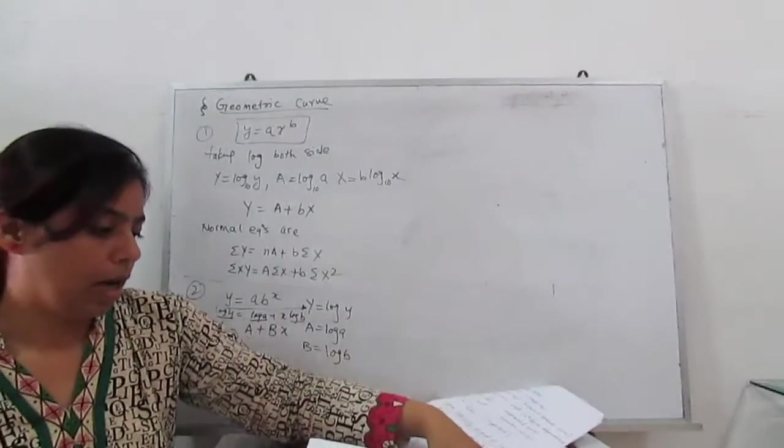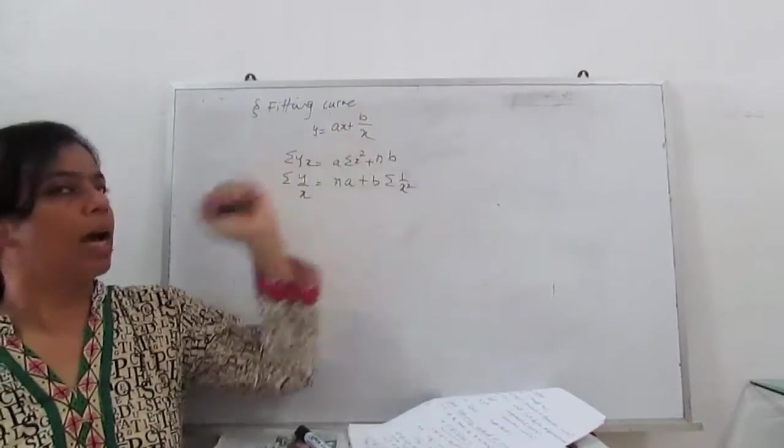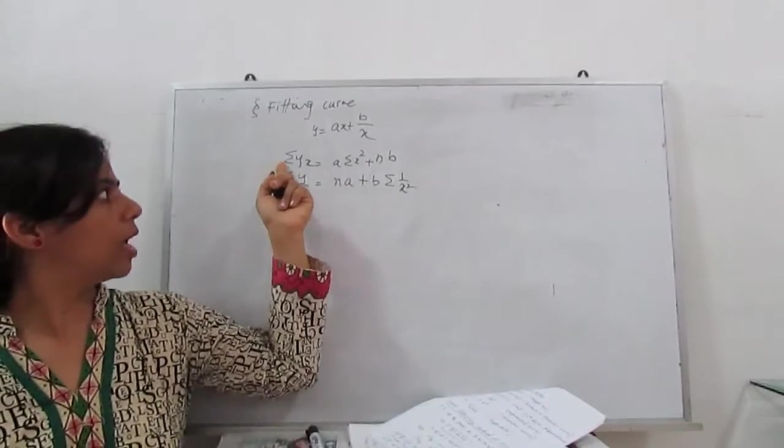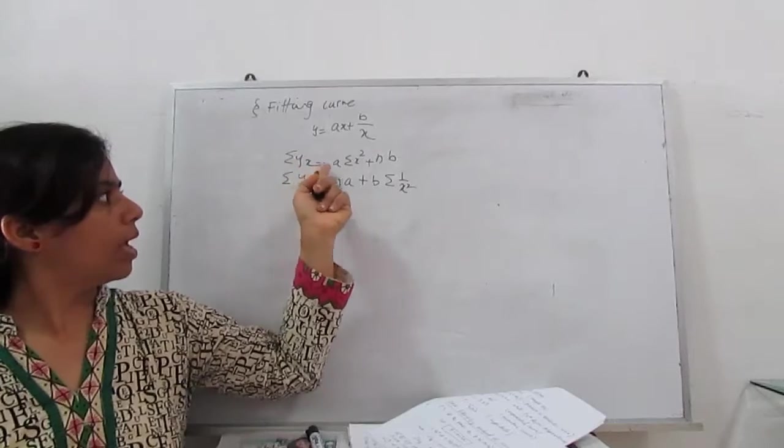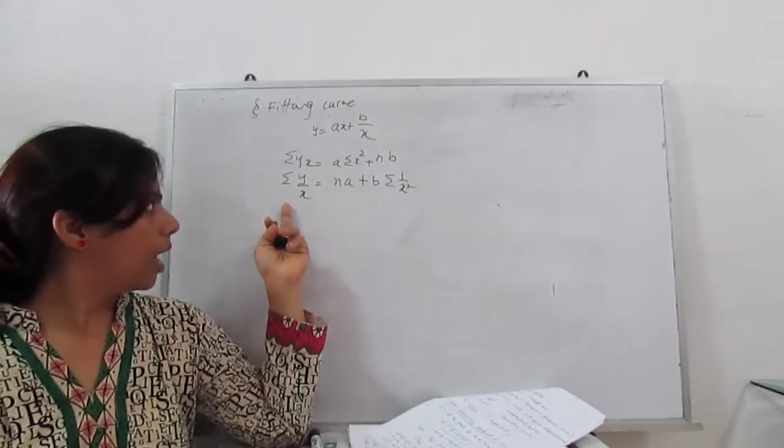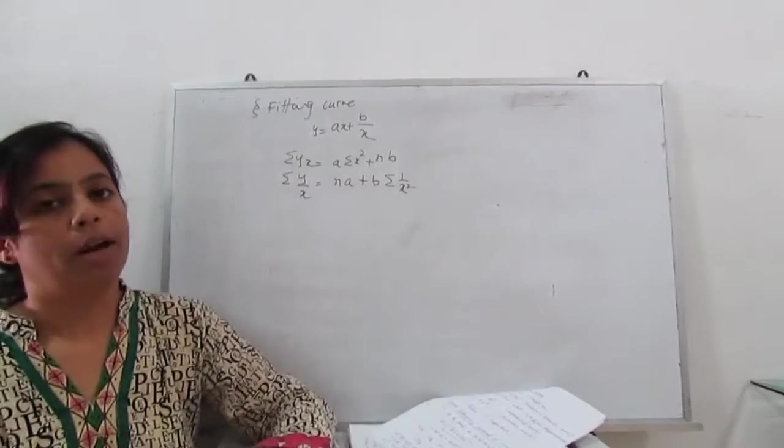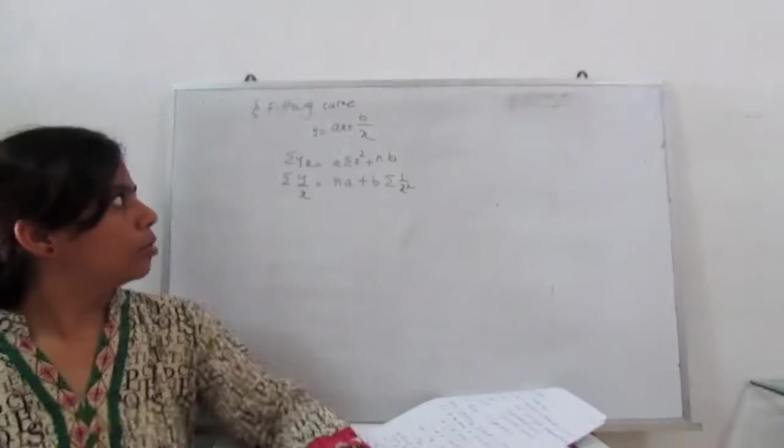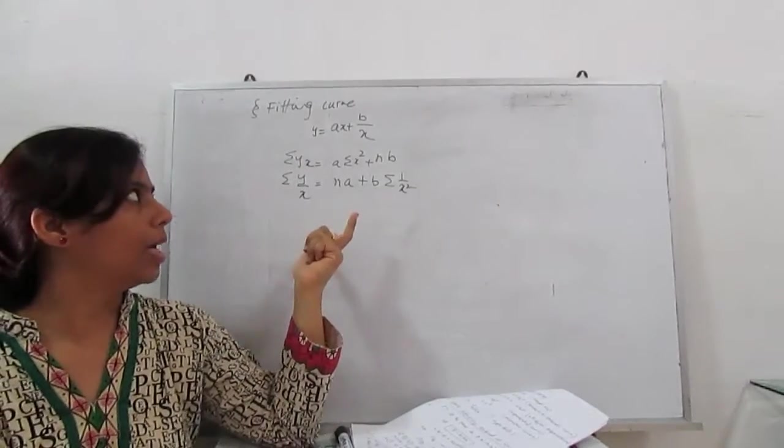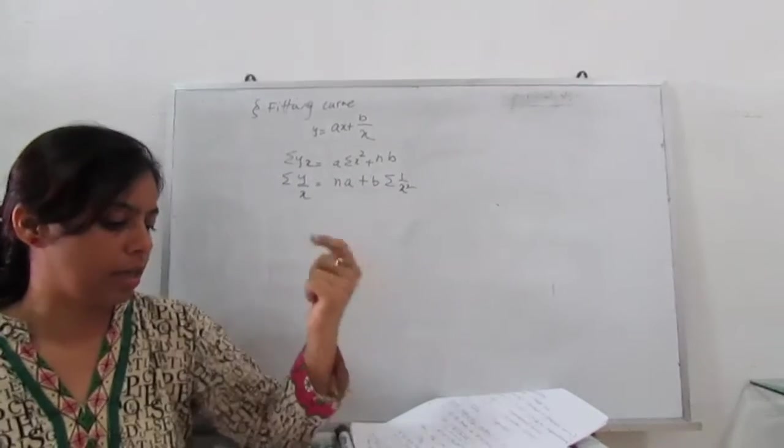Next, one another form of equation. I will show you a curve like this, y equals ax plus b by x. So what are the normal equations for this curve? Normal equation for this curve is summation yx equals a summation x square plus nB, n is the number of terms. And another normal equation is summation y by x equals nA plus b summation 1 by x square.